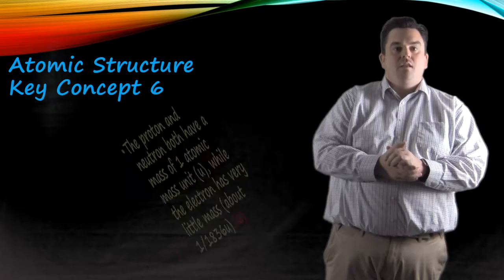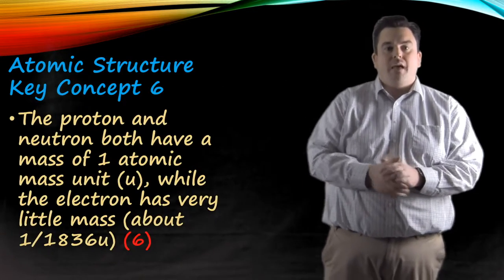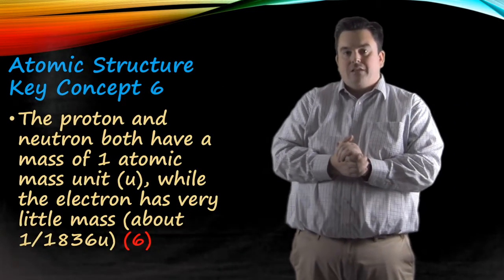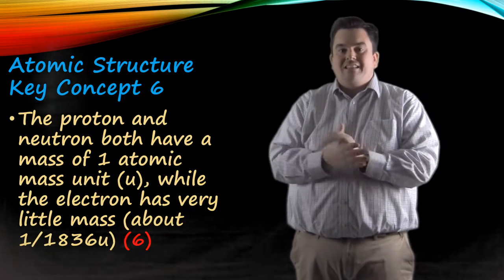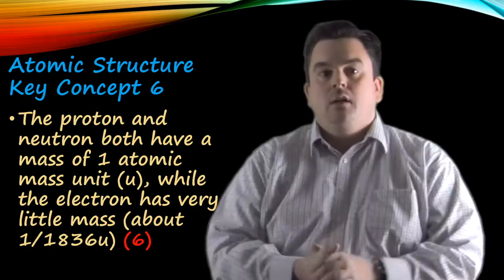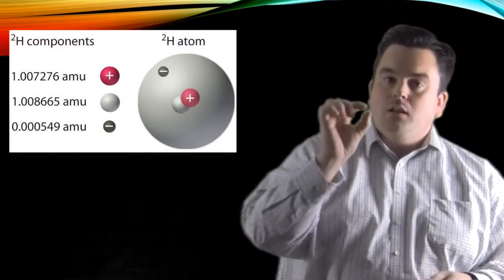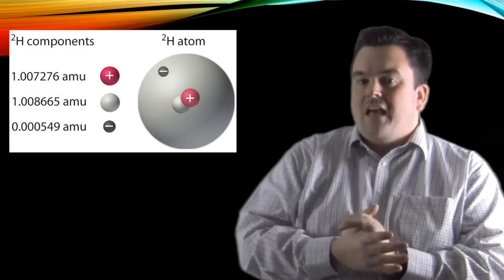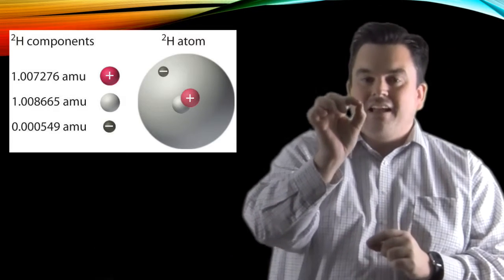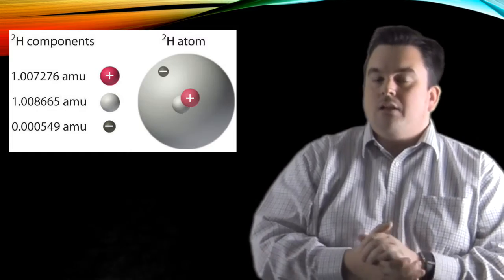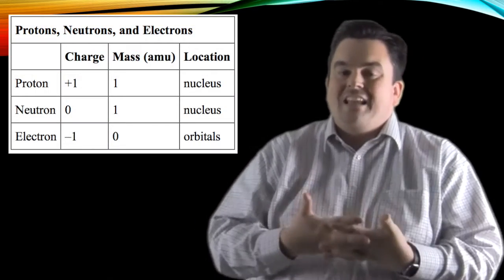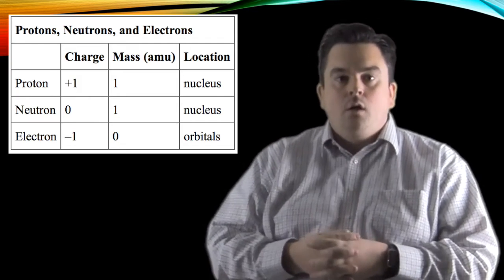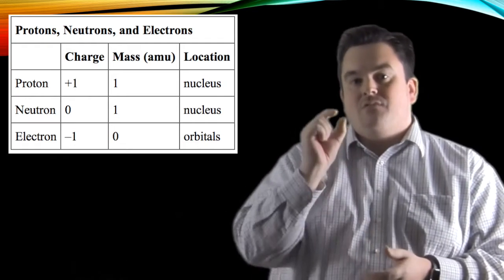Atomic structure, key concept six. The proton and the neutron both have a mass of one atomic mass unit, U. While the electron has very little mass, about one 1836th U. Now, the proton and the neutron having a mass of one and being located in the nucleus means all the mass of that atom is concentrated in that small nucleus. Now, the electron has very little mass by comparison, so when we're taking into account the overall mass of an atom, we say that the electron has a mass of zero.